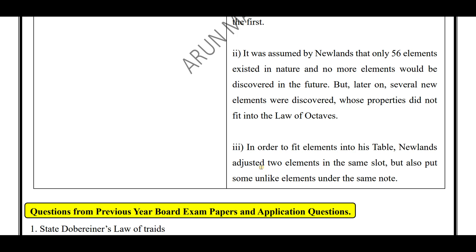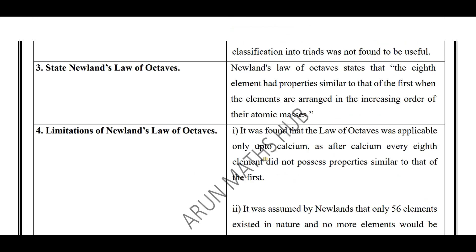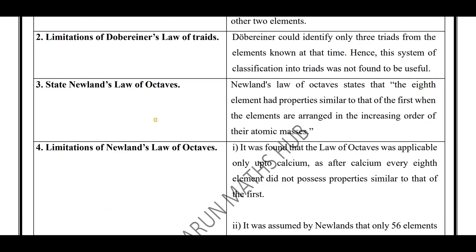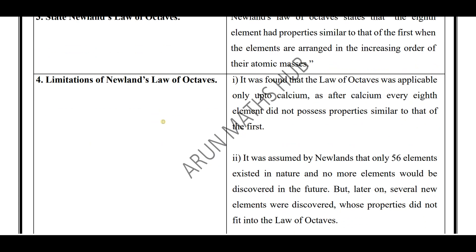Third limitation: in order to fit elements into his table, Newland adjusted two elements in the same slot, which is not at all useful. He also put some unlike elements under the same note. Placing two elements in the same slot was the third limitation of Newlands Law of Octaves.